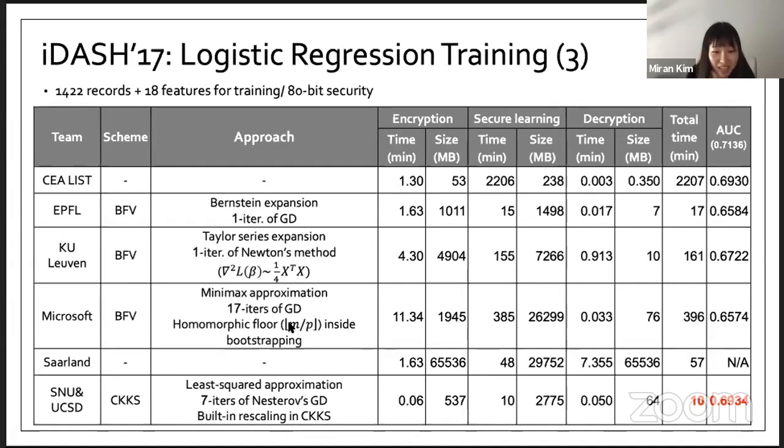They addressed the concern about the growth of message and error compared to EPFL and KU Leuven. But at that time, the performance of bootstrapping was not so good. As far as I remember, each iteration of gradient descent takes around 20 minutes. But anyway, it's very meaningful solutions to extend the computation calls linearly with arbitrary number of iterations.